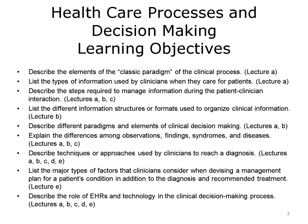The objectives for health care processes and decision making are to describe the elements of the classic paradigm of the clinical process; list the types of information used by clinicians when they care for patients; describe the steps required to manage information during the patient-clinician interaction; list the different information structures or formats used to organize clinical information; describe different paradigms and elements of clinical decision making; explain the differences among observations, findings, syndromes, and diseases; describe techniques or approaches used by clinicians to reach a diagnosis; list the major types of factors that clinicians consider when devising a management plan for a patient's condition in addition to the diagnosis and recommended treatment; and finally, describe the role of EHRs and technology in the clinical decision making process.